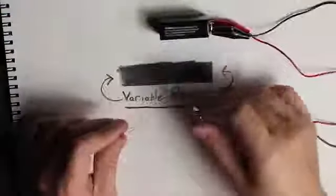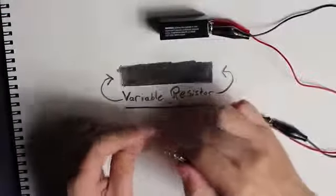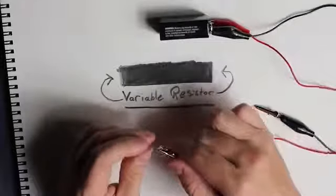Graphite itself is a pretty terrible conductor of electricity, but it will carry just enough to light up an LED when the source is a 9-volt battery.